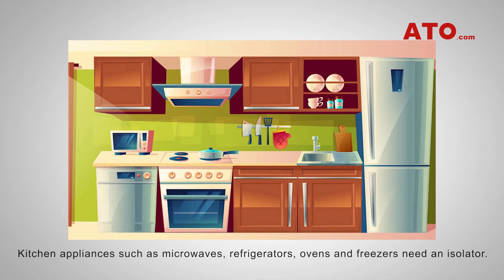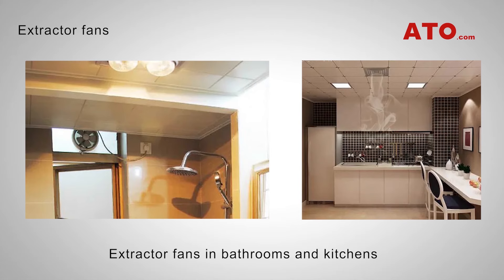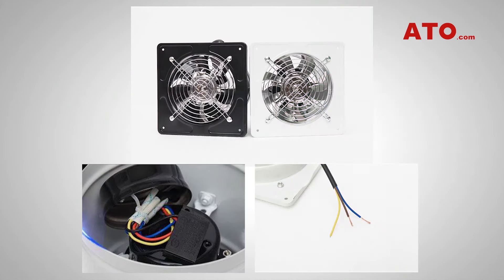Below we'll take a look at some of the devices that require an isolation switch. Extractor fans are commonly found in bathrooms or kitchens and serve the purpose of removing stale and humid air to replace it with fresh air. Due to the complex electric mechanism of these machines and the power they possess, they need isolation switches for repairs or maintenance. Fans commonly use three pole isolation switches, as there are three lines that usually need to be disconnected to fully isolate the fan.